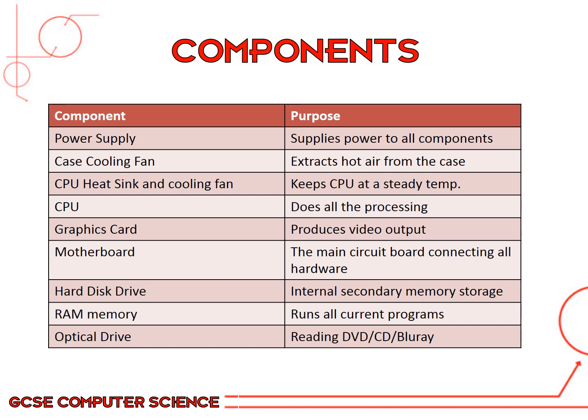You need to know the components and what the actual purpose of each component is. The power supply supplies power to all of the components inside the computer. There's a case cooling fan inside the plastic part of your computer where all the components are kept — this takes all the hot air from the computer and pushes it out to stop it overheating. You have a CPU heatsink and a cooling fan specifically for the CPU, which stops the main brain of the computer from getting too hot. You have the actual CPU, which does all of the processing of data and instructions inside the computer. You've got a graphics card, which is what allows you to actually see what's happening on the computer.